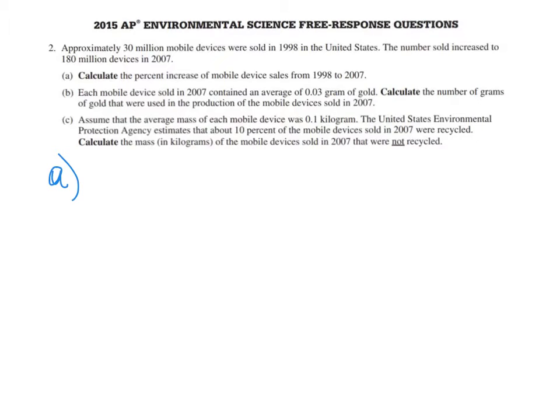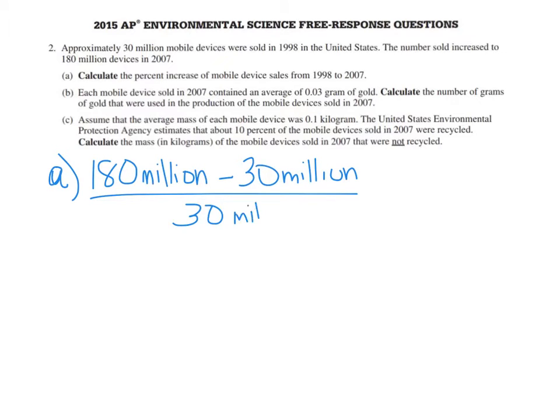It will not give you an equation sheet so you have to memorize it. Percent change is your ending number minus your starting number divided by your starting number, or you can take the difference divided by the starting number. So the ending number is 180 million, our starting number is 30 million divided by our starting number, 30 million. Ending minus starting over starting, and that's times 100.